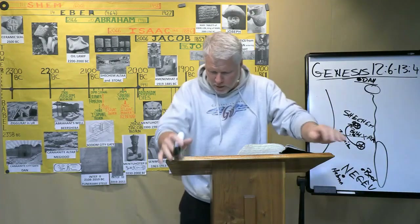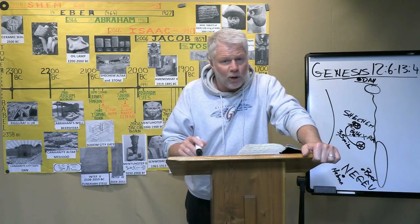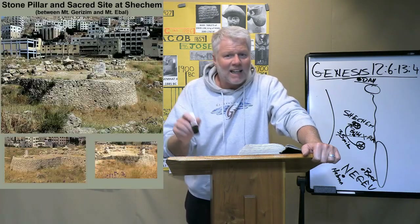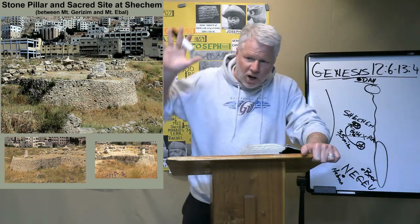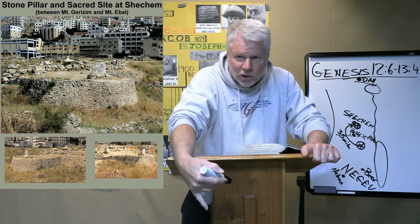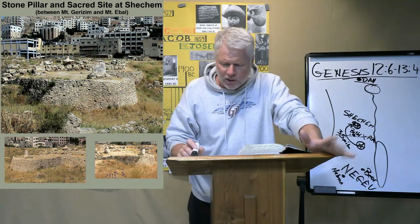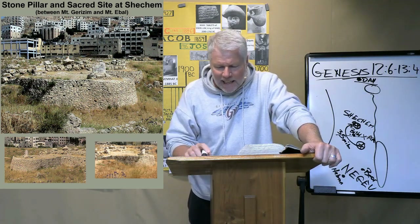It's called Baal-Berith in the book of Judges. One of the judges goes there and is trying to find a fortress there, and as he's attacking it, a woman pushes a millstone off the top of the wall and crushes and kills him. David recounts that story in the book of Judges — it all takes place right here at Shechem.